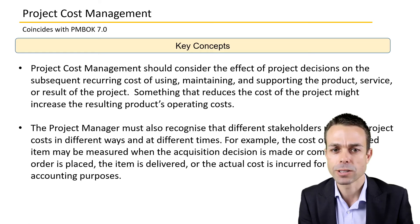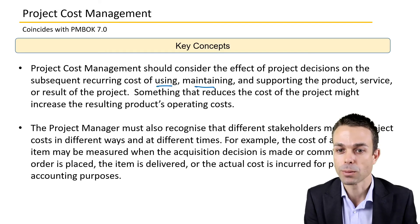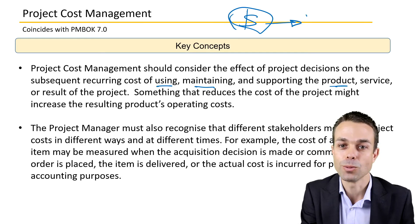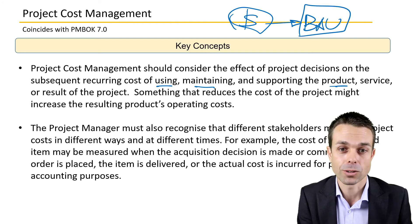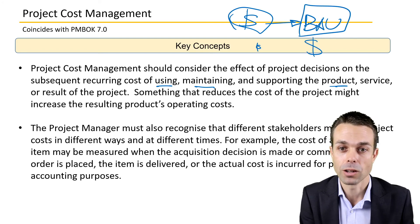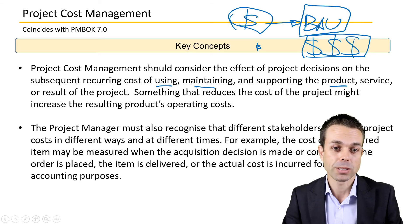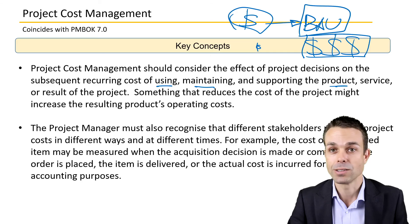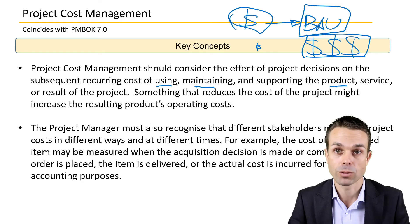Key concepts for project cost management: we should consider the effect of project decisions on the subsequent recurring cost of using, maintaining, and supporting the product, service, or result — how much is it going to cost in business as usual. There's no point delivering something cheaply if it costs a lot to run afterwards; it might just not be worth the money. The project manager must also recognize that different stakeholders measure project costs in different ways, and we have to be open to those different approaches.